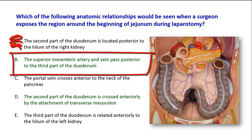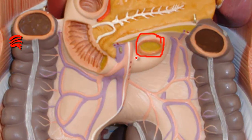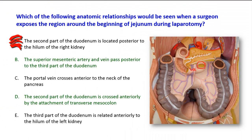Option B: the superior mesenteric artery and vein. Here is the superior mesenteric artery and vein. The option says that the superior mesenteric artery and vein pass posterior to the third part of the duodenum. In fact, they both pass anterior to the third part of the duodenum.